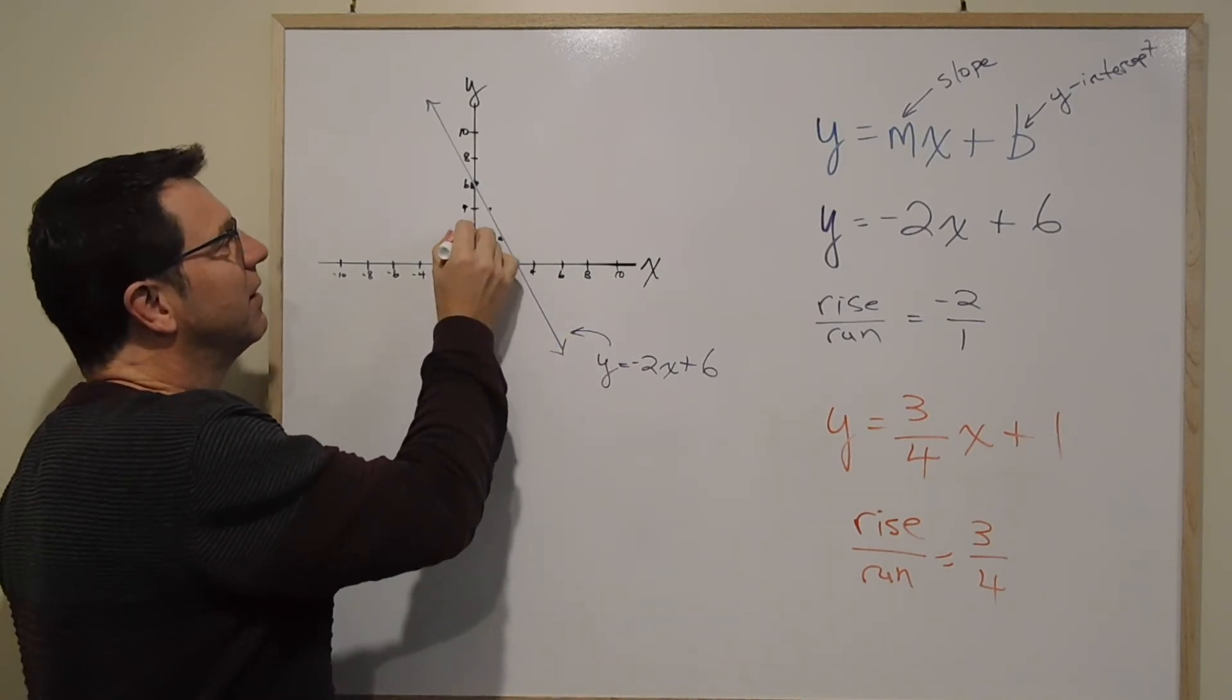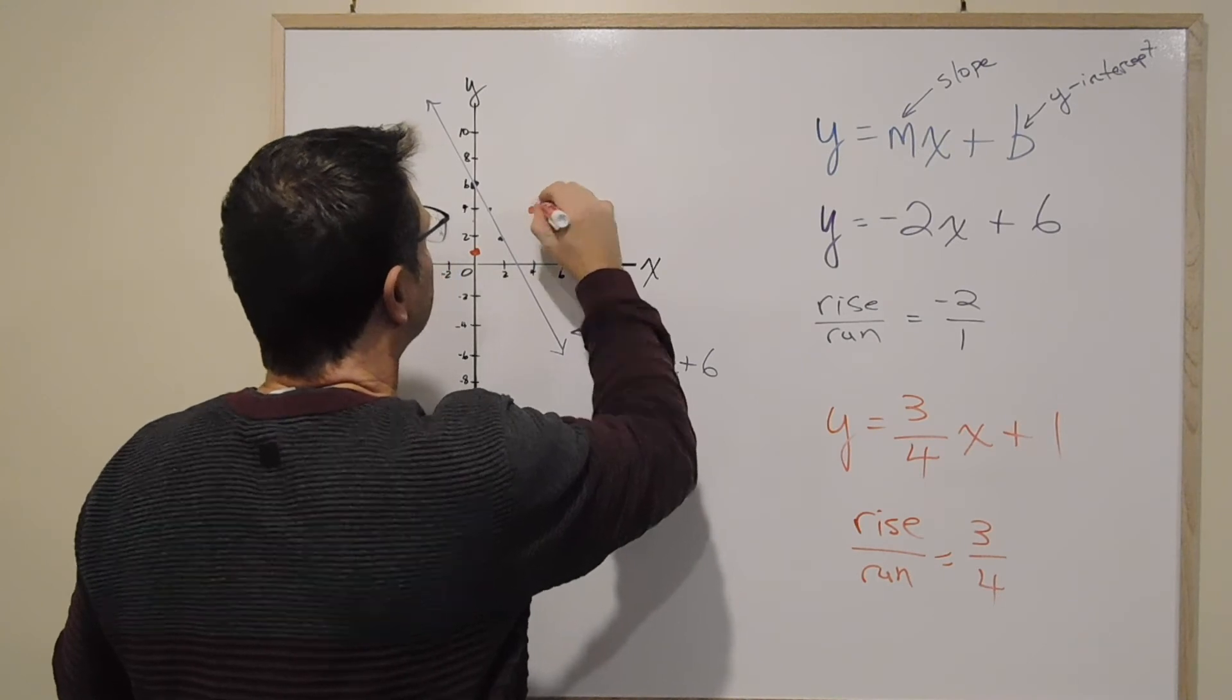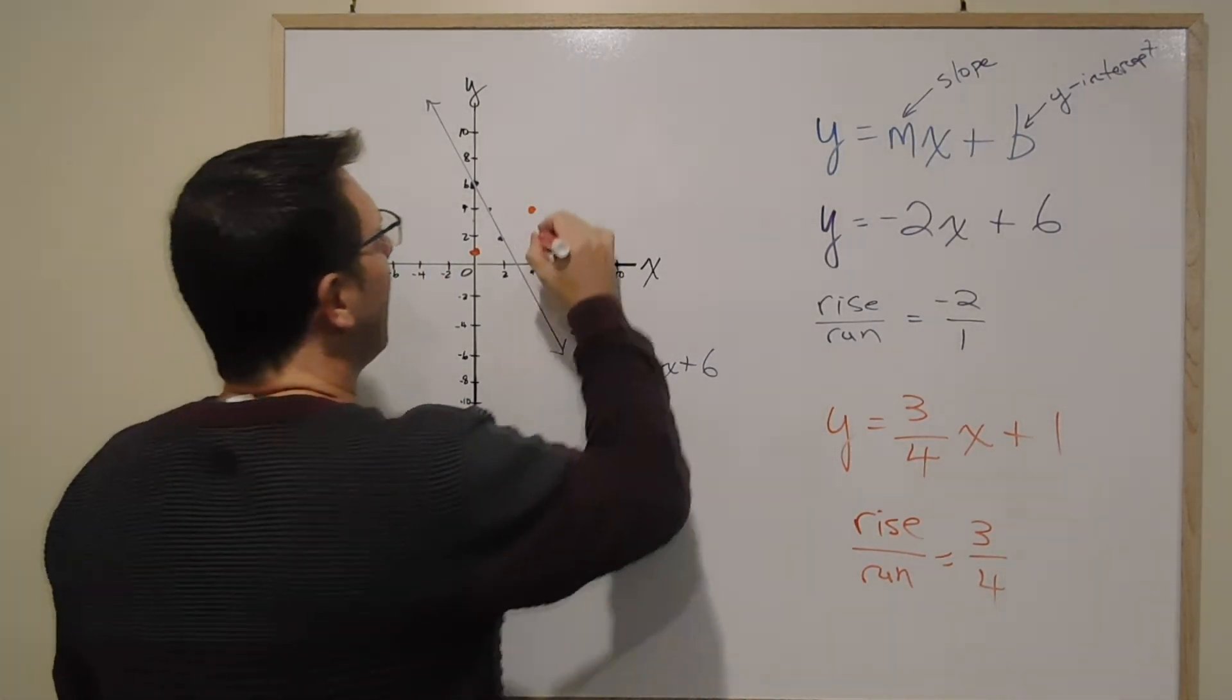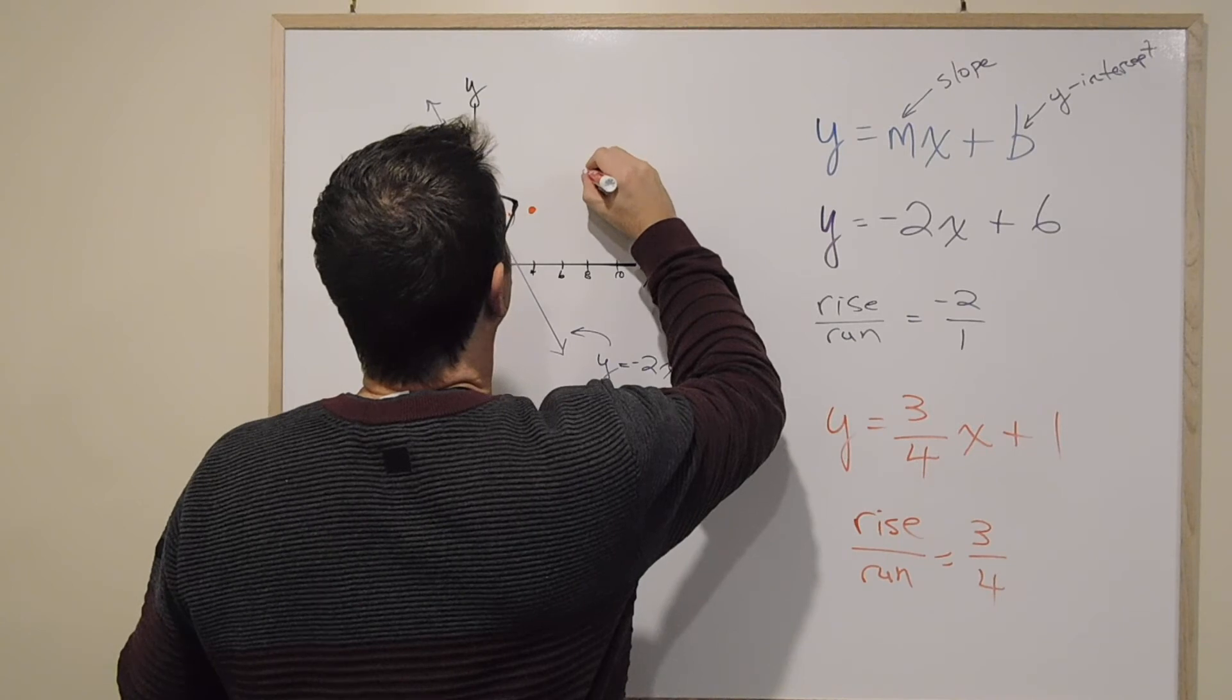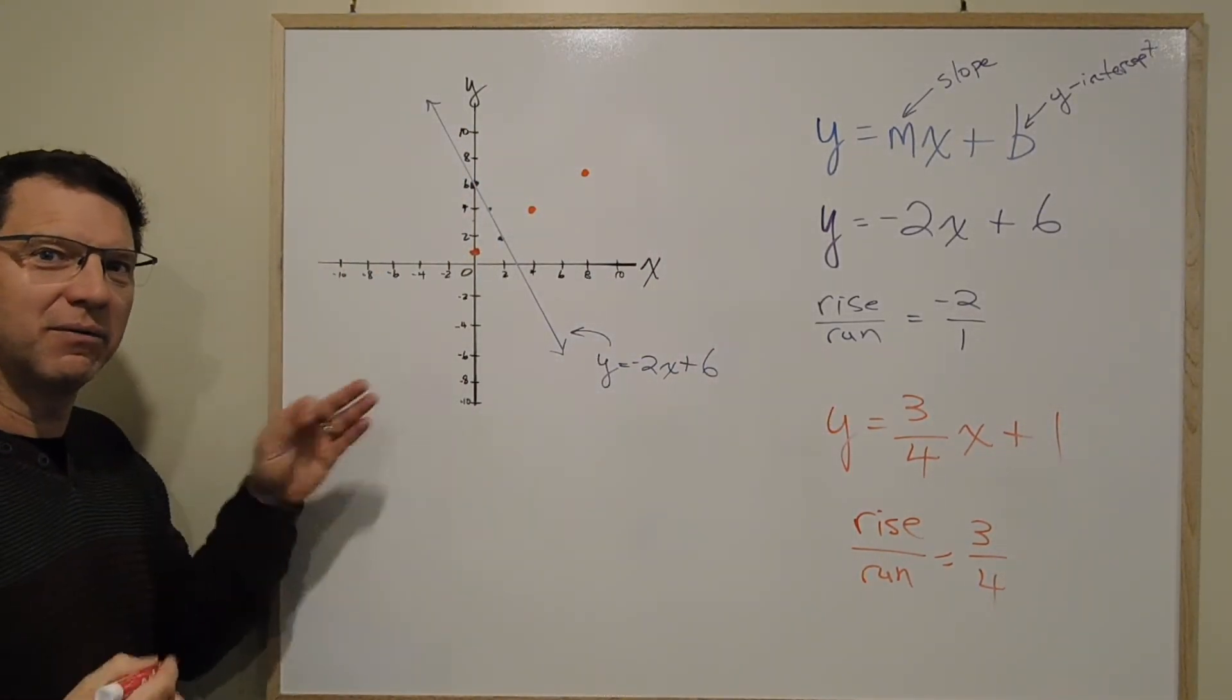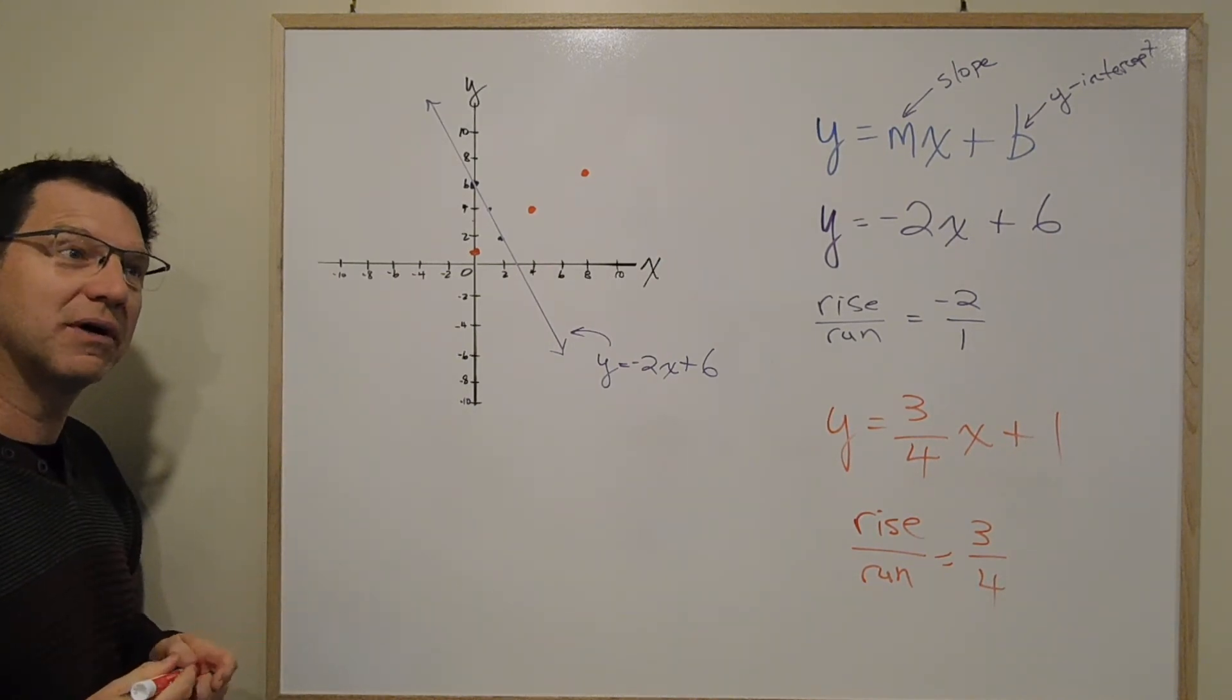So I'll go up 3. 1, 2, 3. And I'll go over 4. And I'll be right here. And I'll do the same thing again. I'll count up. 1, 2, 3. And I'll go over 4. And I'll be right here. In fact, we could go down and backwards if we wanted. If we wanted to do double negative, we could. And we get a point down in here and it would still work.